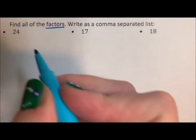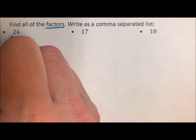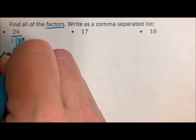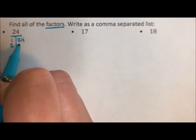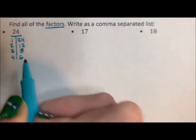So the way I'm going to figure these out is by doing a factor tree. We have 1 times 24, 2 times 12, 3 times 8, and 4 times 6.